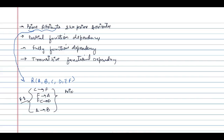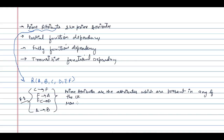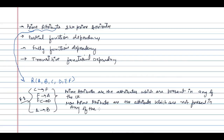Prime attributes are the attributes which are present in any of the candidate key, and non-prime attributes are the attributes which are not present in any of the candidate key. Now for this given relation, let's find out what candidate keys are possible.